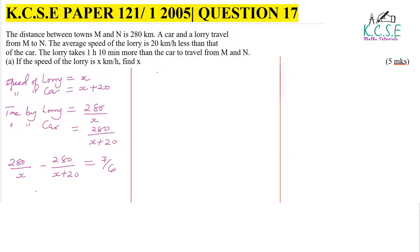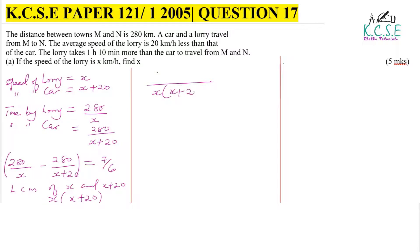To work out the left-hand side, we get the LCM — the least common multiple of X and X plus 20 — which gives X times X plus 20. Using that LCM, the expression becomes: 280 times X plus 20, minus 280X, all over X times X plus 20, equal to 7 over 6.